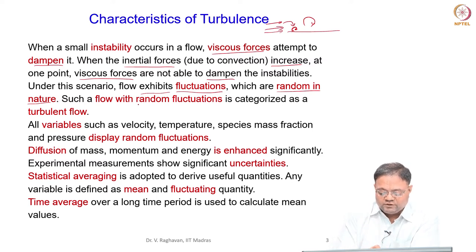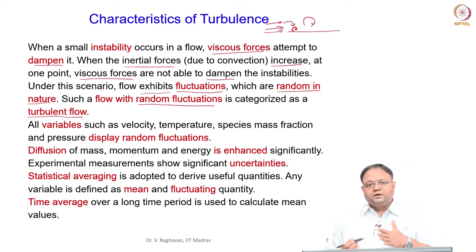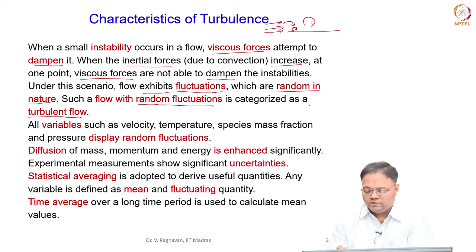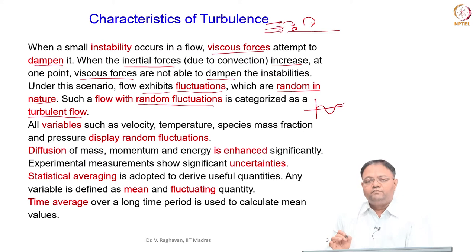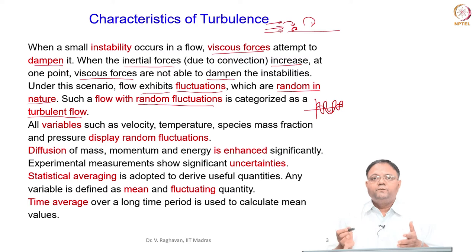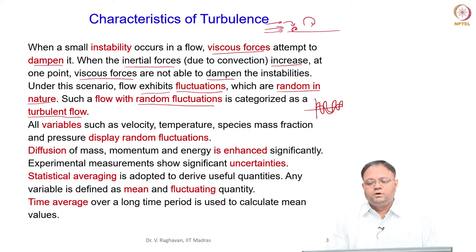If there is a flow which has random fluctuations, we call that a turbulent flow. There is disorder and no structured flow pattern, and the flow has fluctuations of different frequencies — not a single sine wave but multiple frequencies superimposed over each other, which constitutes a random fluctuation.